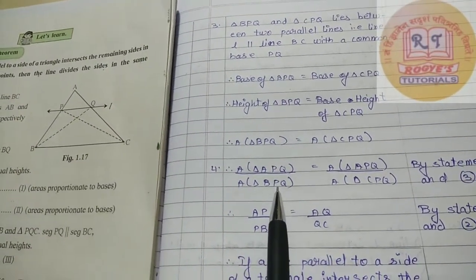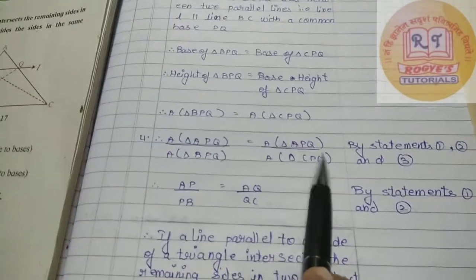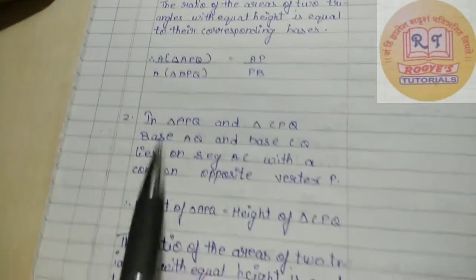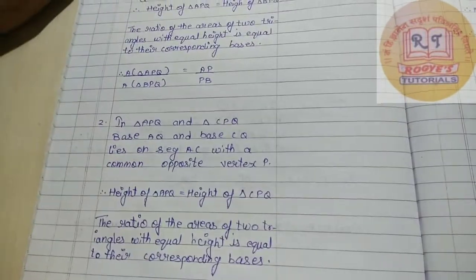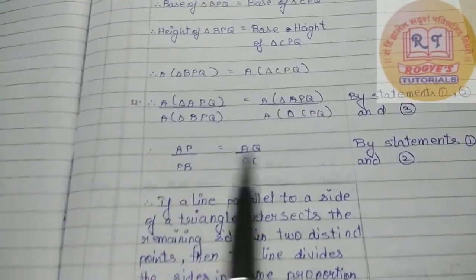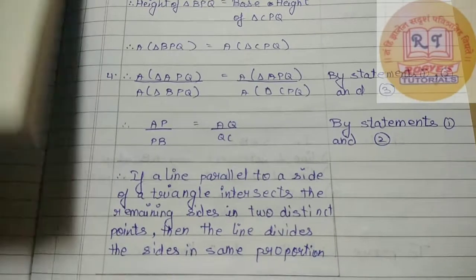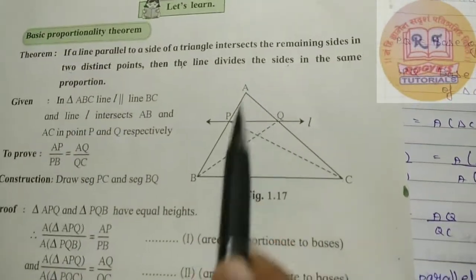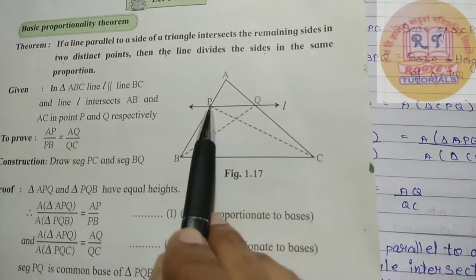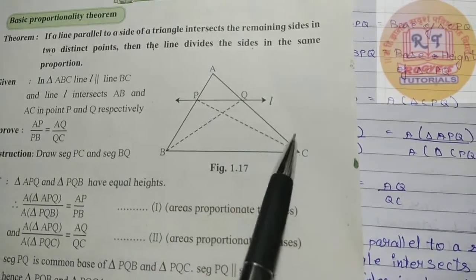Therefore, area of triangle APQ upon area of triangle BPQ is equal to area of triangle APQ upon area of triangle CPQ. So these two ratios are the same. The left-hand side is equal and the right-hand side is equal. Therefore, AP upon PB is equal to AQ upon QC by statements 1 and 2. This way we have proved that if a line is parallel to a side of the triangle, then AP upon PB is equal to AQ upon QC.